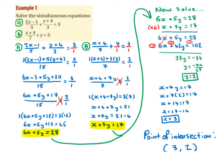Now we'll solve the same equations in a slightly different way. Taking the first equation — (2x minus 1) over 5 plus (y plus 4) over 3 equals 3 — instead of multiplying across by the LCM, we'll simplify the left-hand side by combining the two fractions. The 3 becomes 3 over 1, since any whole number can go over 1, because we need a fraction on both sides when we cross multiply. With denominators 5 and 3, the common denominator is 15.